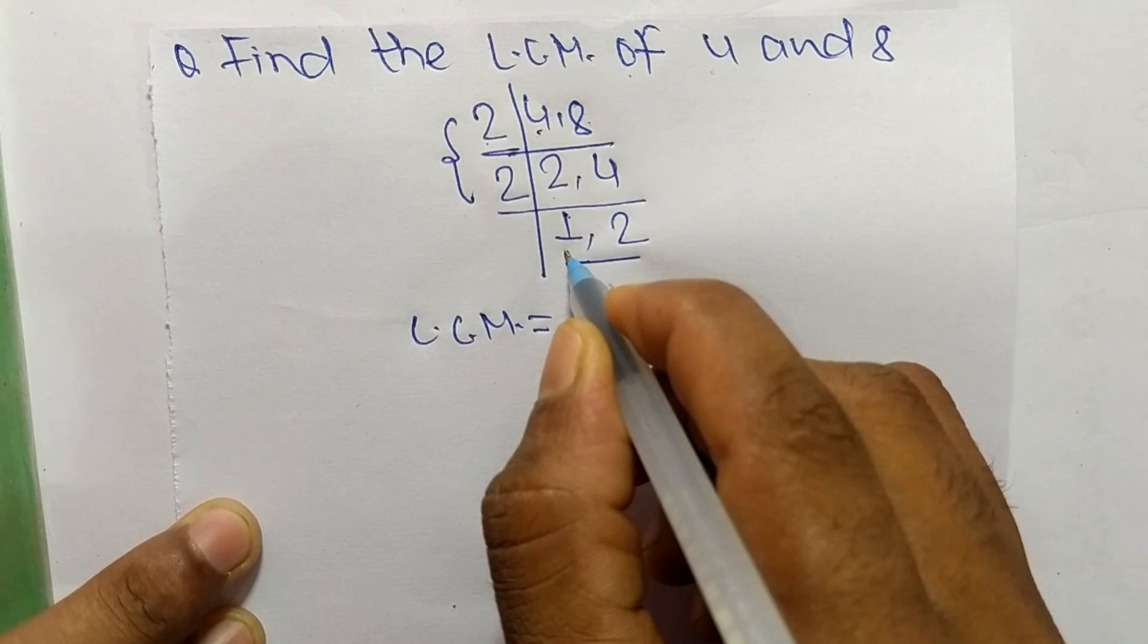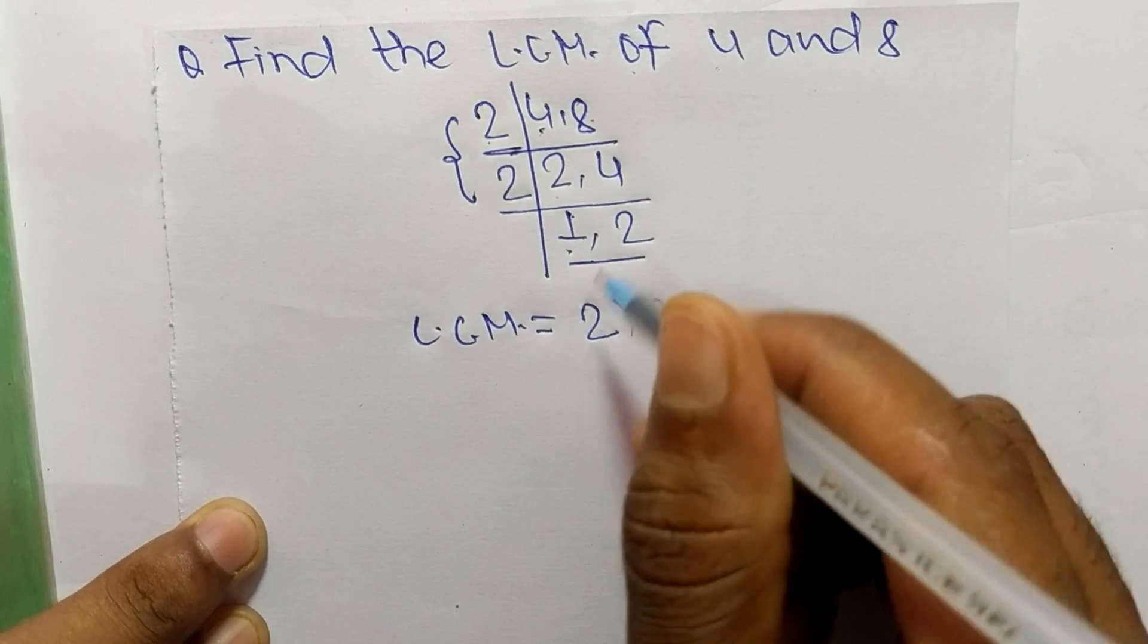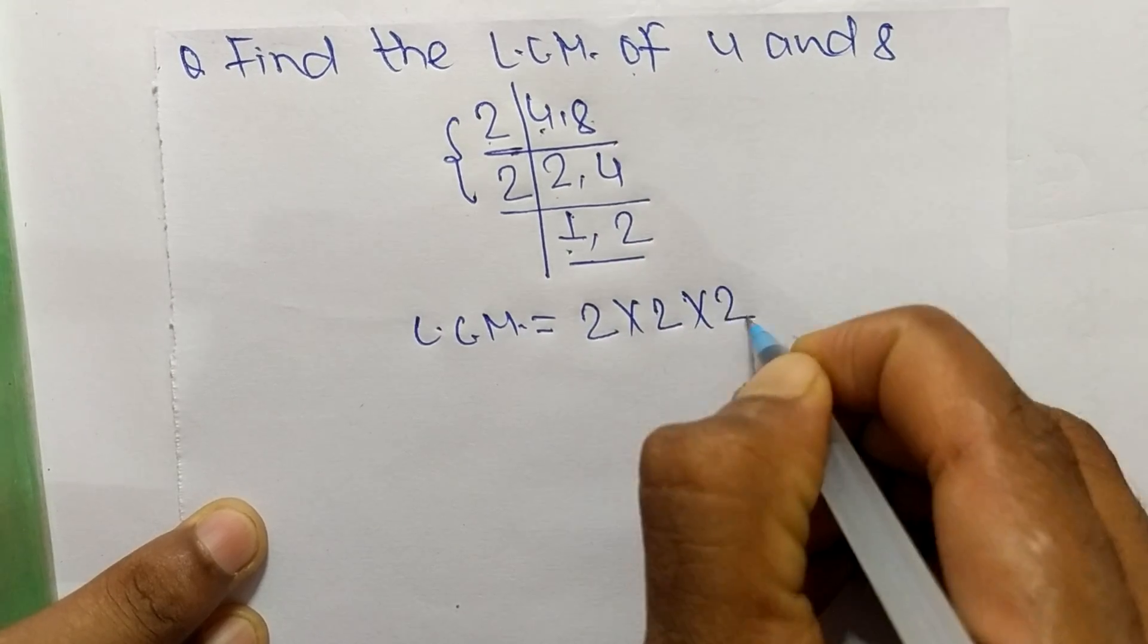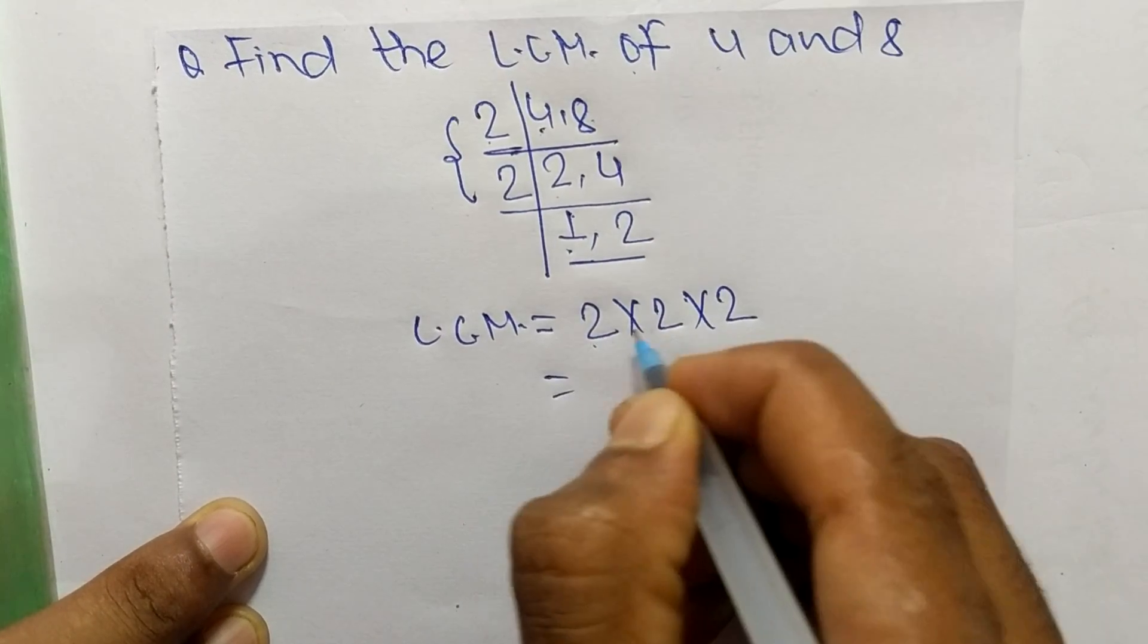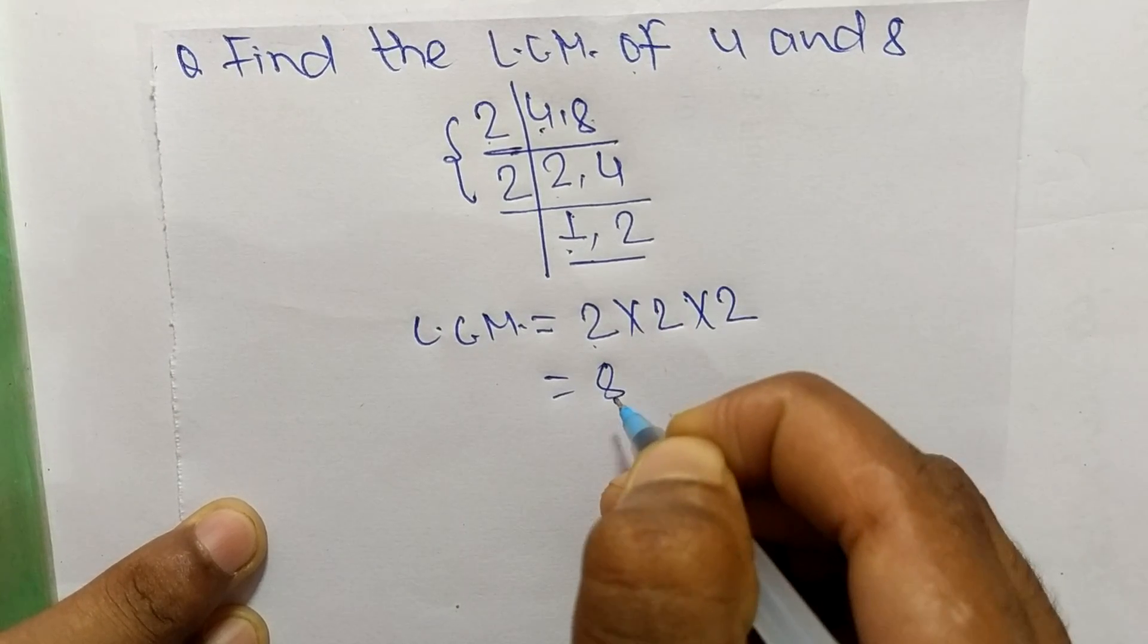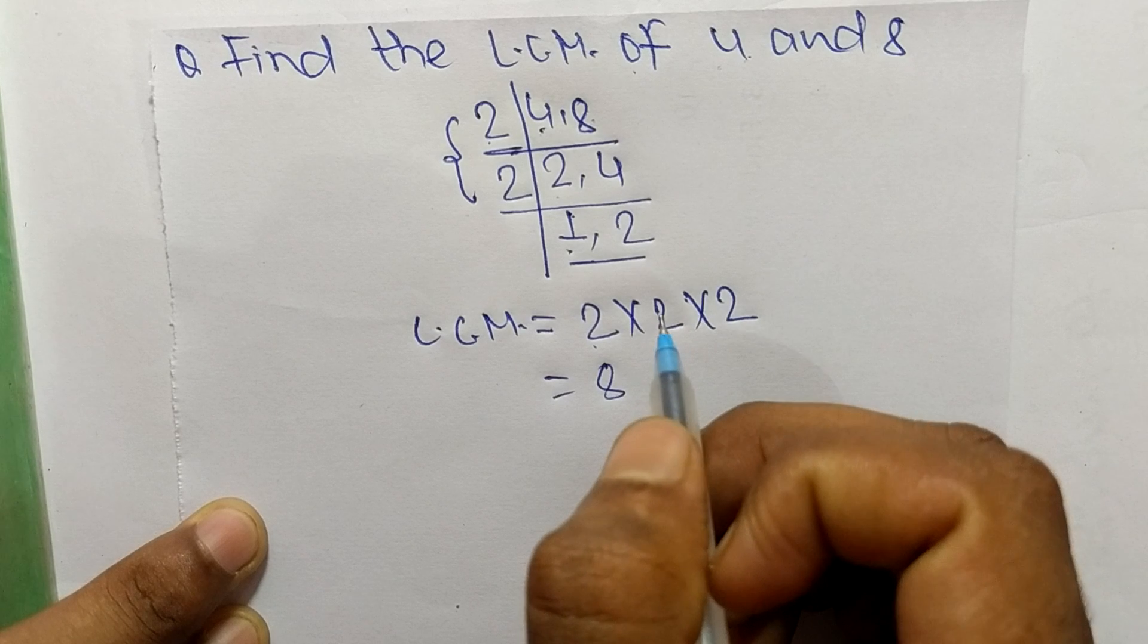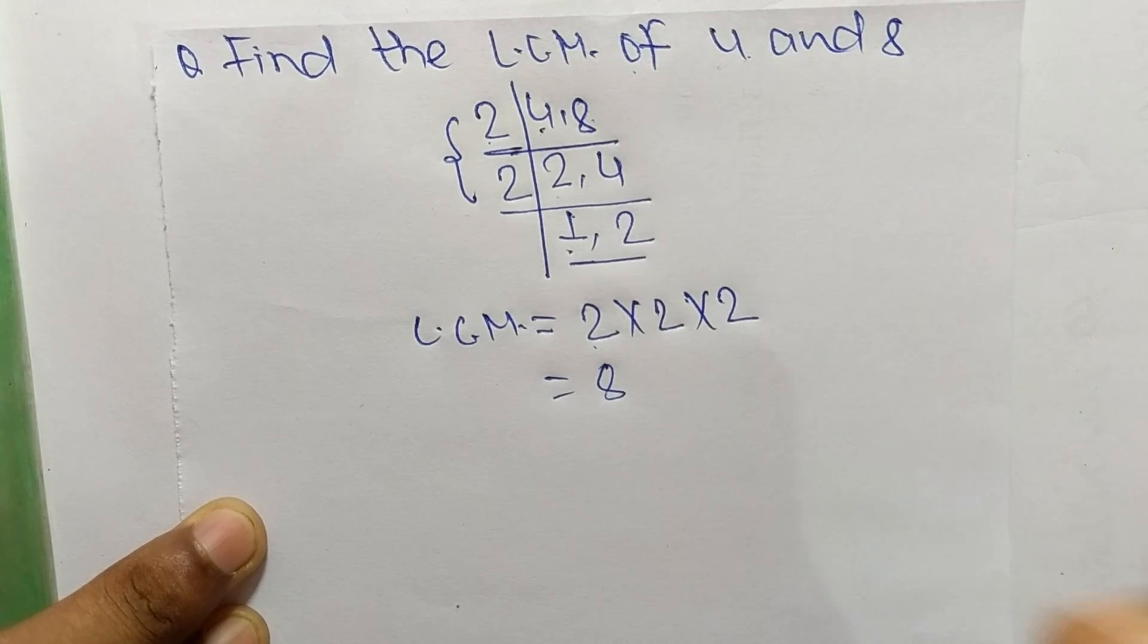neglect the 1 because multiplying with 1 we get the same number. So the next number is 2. It is 2 times 2 means 4, and 4 times 2 means 8. So 8 is the LCM of 4 and 8. This much for today, and thanks for watching.